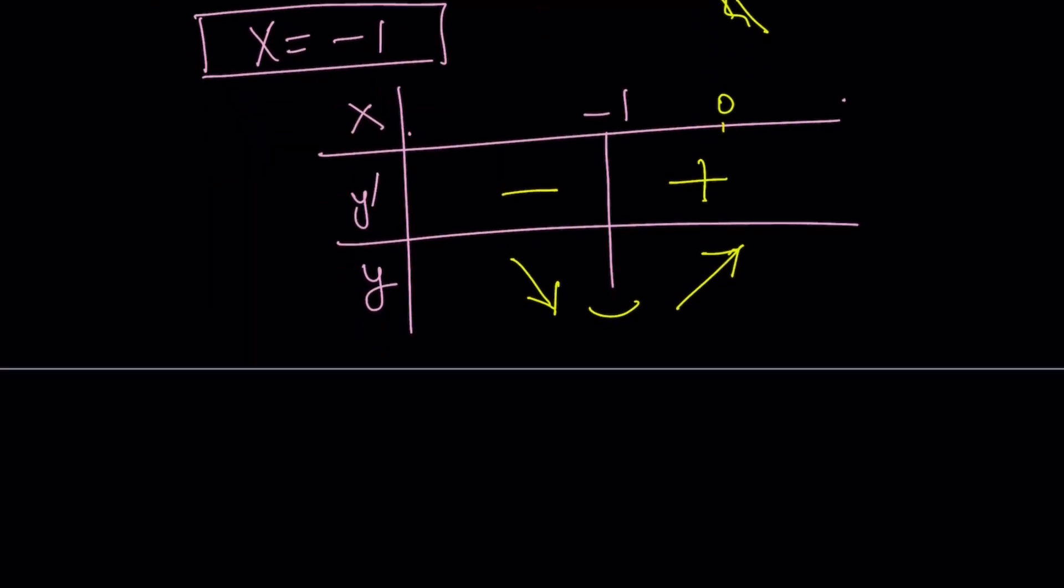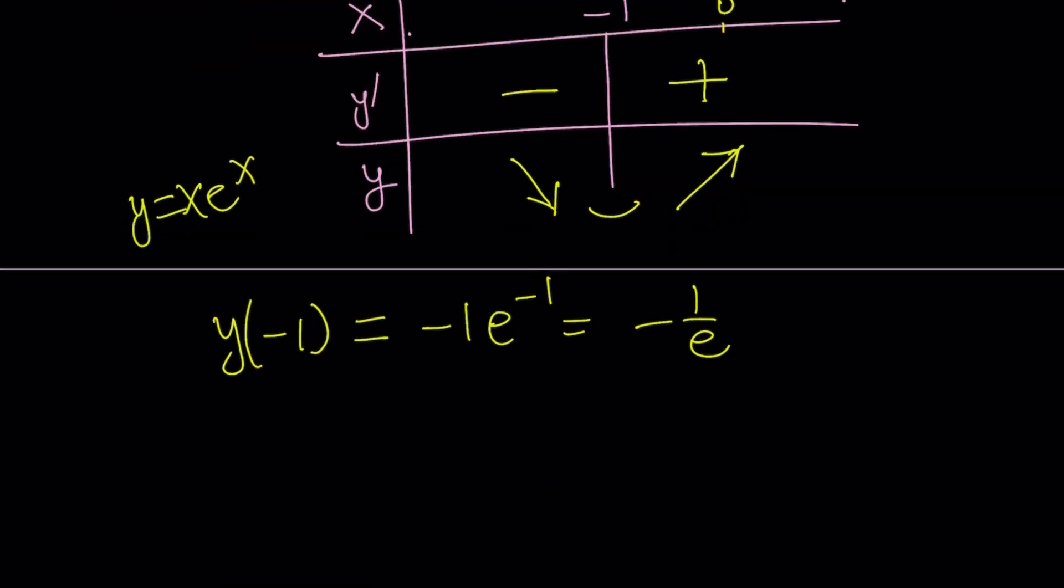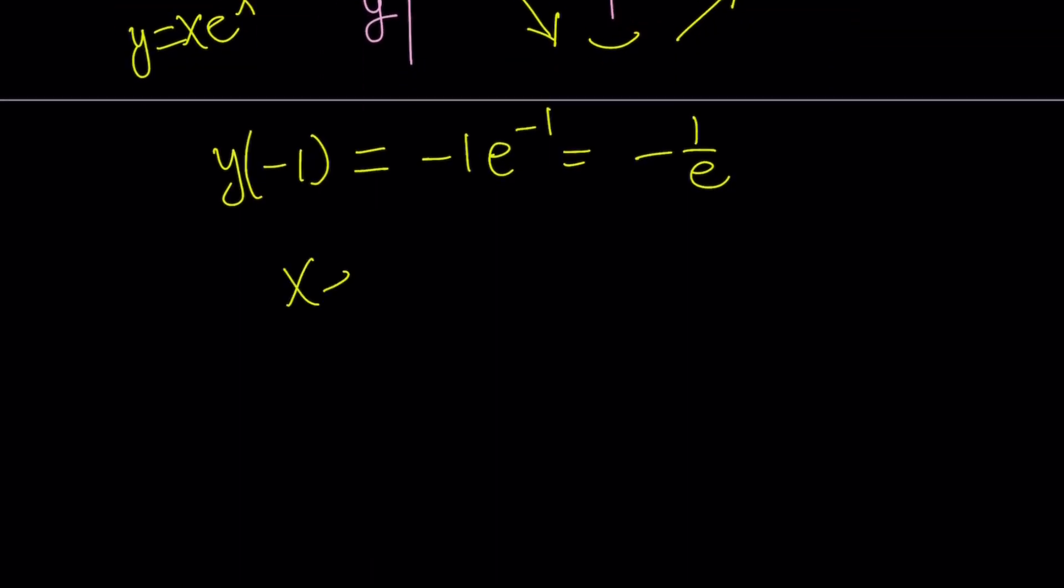And what is that value? Let's go ahead and replace x with negative 1. Remember, our function was x e to the x. If you replace x with negative 1, you get negative 1 times e to the power of negative 1, which is the same thing as negative 1 over e. Oh, great. We got the values. We were looking for the solution to this equation, and we found it at the minimum value. What is that supposed to mean? Let's take a look at the graph and explain what that means.